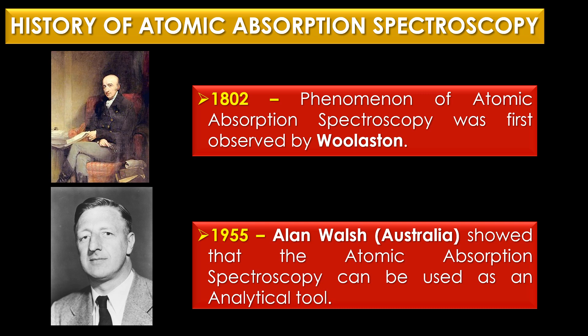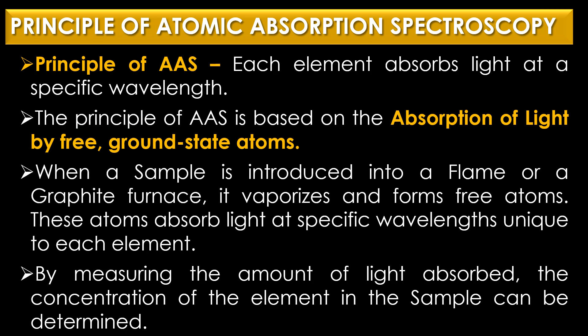The principle of atomic absorption spectroscopy is based on the fact that each element absorbs light at a specific wavelength. When a sample is introduced into a flame or a graphite furnace, it vaporizes and forms free atoms. These atoms absorb light at specific wavelengths unique to each element. By measuring the amount of light absorbed, the concentration of the element in the sample can be determined.